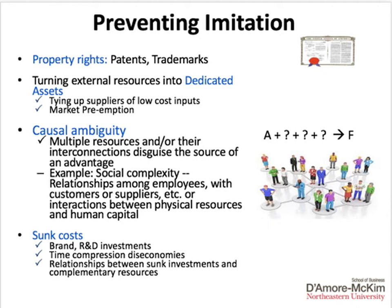A third source of preventing imitation is causal ambiguity, where the firm's advantage is based on combinations of resources and capabilities that are difficult to understand and copy. For example, an advantage based on relationships among employees, relationships with customers, or relationships with suppliers provides an advantage that is difficult, first, to understand and, second, to recreate. Rivals have to first figure out what we're doing and then try to recreate it. Causal ambiguity makes it harder for them to imitate our advantage, thus preventing imitation.